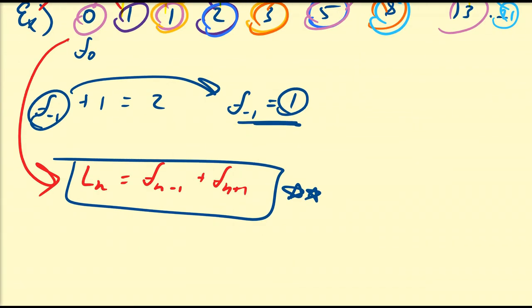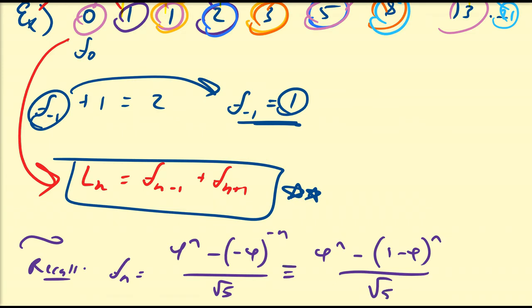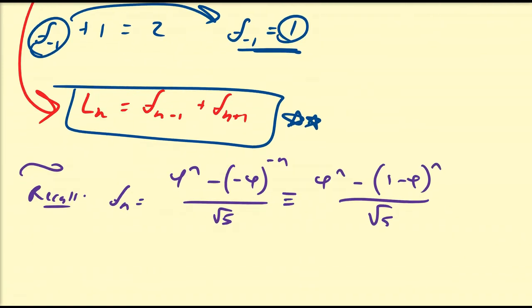Since Fibonacci is generated by powers of phi, the Lucas numbers should also be generated by powers of phi. Recall that the nth Fibonacci number equals phi^n minus (1-phi)^n, all divided by the square root of 5. One can find, using properties of phi, that this equals phi^(n-1) minus phi^m all over the square root of 5. I leave it to you to verify that those two are equivalent.